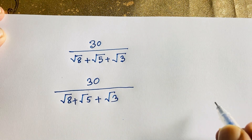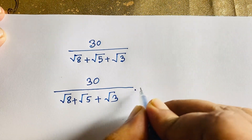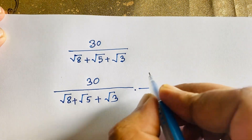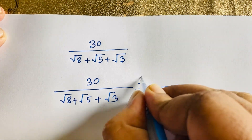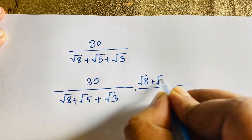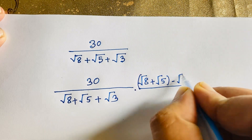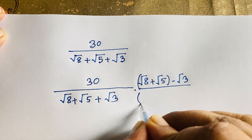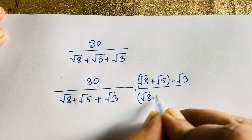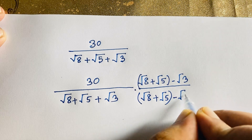To solve this, I multiply by the conjugate: square root 8 plus square root 5 minus square root 3, over square root 8 plus square root 5 minus square root 3.